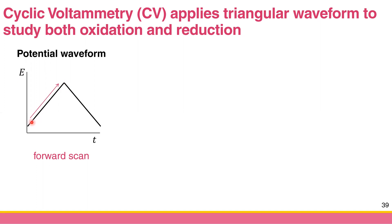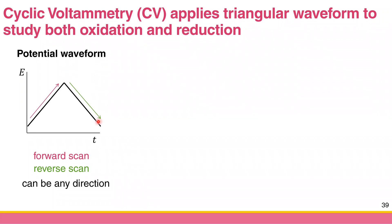For example, this is the forward scan — you start at zero and scan to one volt. Then you scan it back in the reverse scan, from one back to zero again. This forward and reverse can be in any direction: you can scan to positive first and then ramp it back, or scan to negative potential first and then increase it back to be positive. It depends on what kind of species are in your solution.